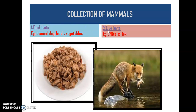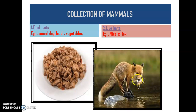The second one is called live baits. Live baits means we are providing a live organism to the animal that we want to collect. For example, you can see that here a fox is holding mice — we are providing a live mouse directly to the fox, as we want to collect this fox. So whichever animal we want to collect, we provide the concerned live food for that particular animal. That is called live baits.